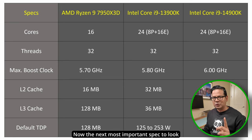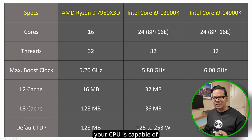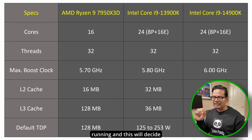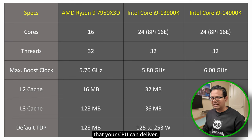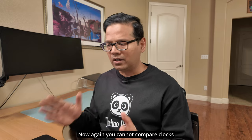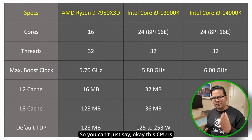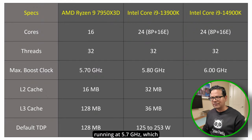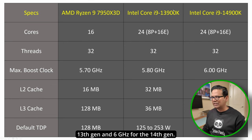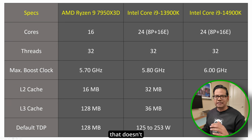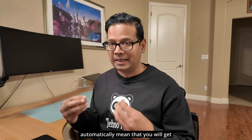The next important spec is the max boost clock — the highest clock frequency your CPU can run, which determines peak performance. However, you cannot directly compare clocks between different architectures. Intel architecture is very different from AMD. So you can't just say Intel is better because it runs at 5.8 GHz for the 13th gen and 6 GHz for the 14th gen, versus AMD's 5.7 GHz max boost. Higher clock frequency doesn't automatically mean better performance.